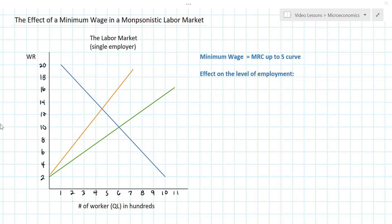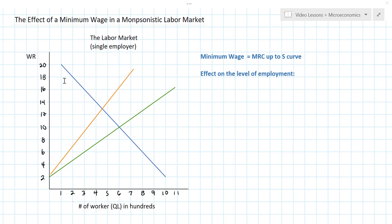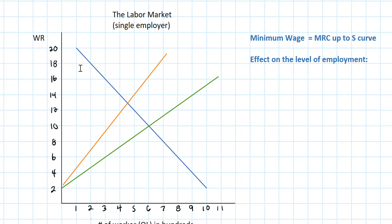In this lesson we're going to examine the effect of a minimum wage when it's imposed in a monopsonistic labor market. We're going to go straight into the graph in this lesson.